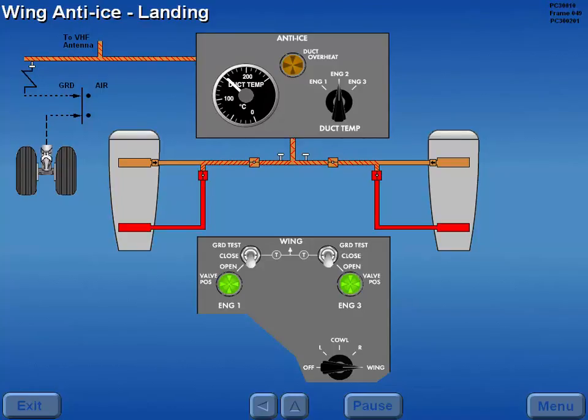If wing anti-ice is on during landing, a ground sensing switch closes all four valves at touchdown.